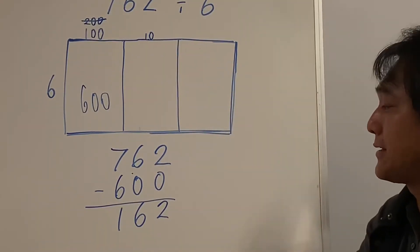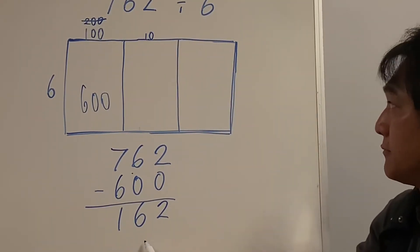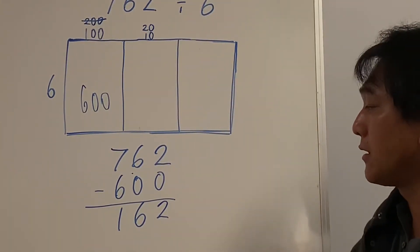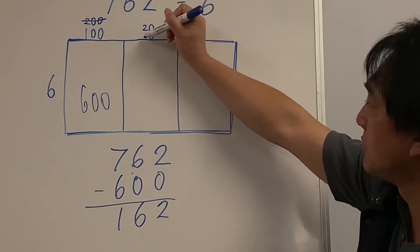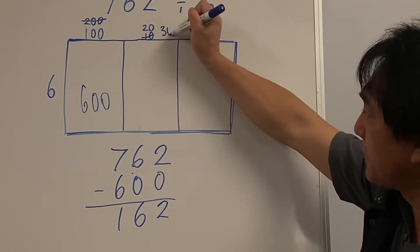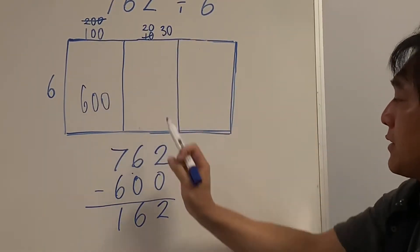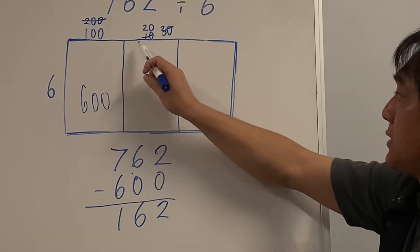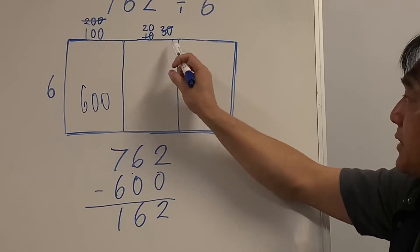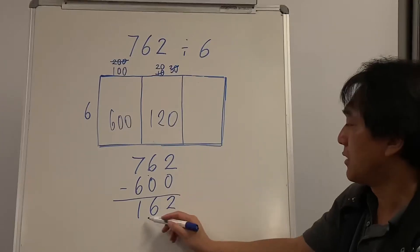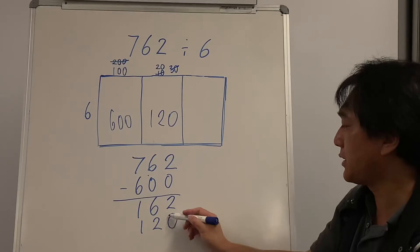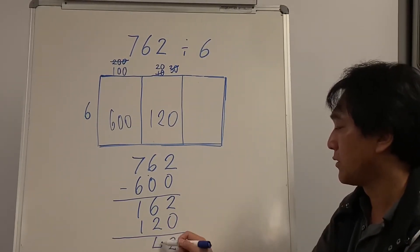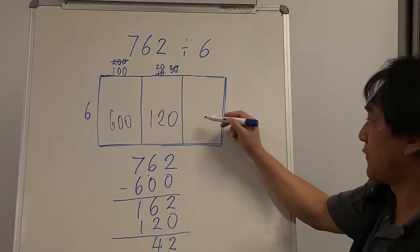This box is for the tens. 6 times 10 is 60 — fits. 6 times 20 is 120 — still fits. 6 times 30 is 180 — too many. So let's use 20: six rows of 20 is 120. I've used 120 cupcakes, and what's left is 42.